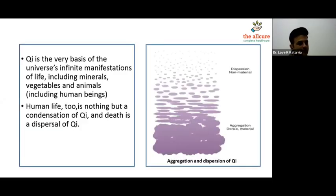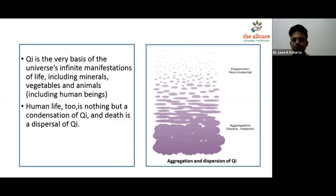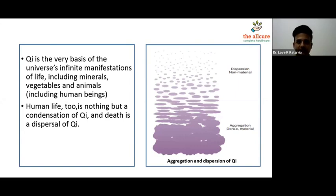A live body is the condensation of Qi, and a dead body is the dispersion of Qi. There is not much difference between a dead man and a live man — the only difference is the presence of Qi. If the Qi is not there, the body remains the same physically, but the difference is in the energy. After that, the body goes back to nature — the decay starts and the Qi has gone back to its origin.